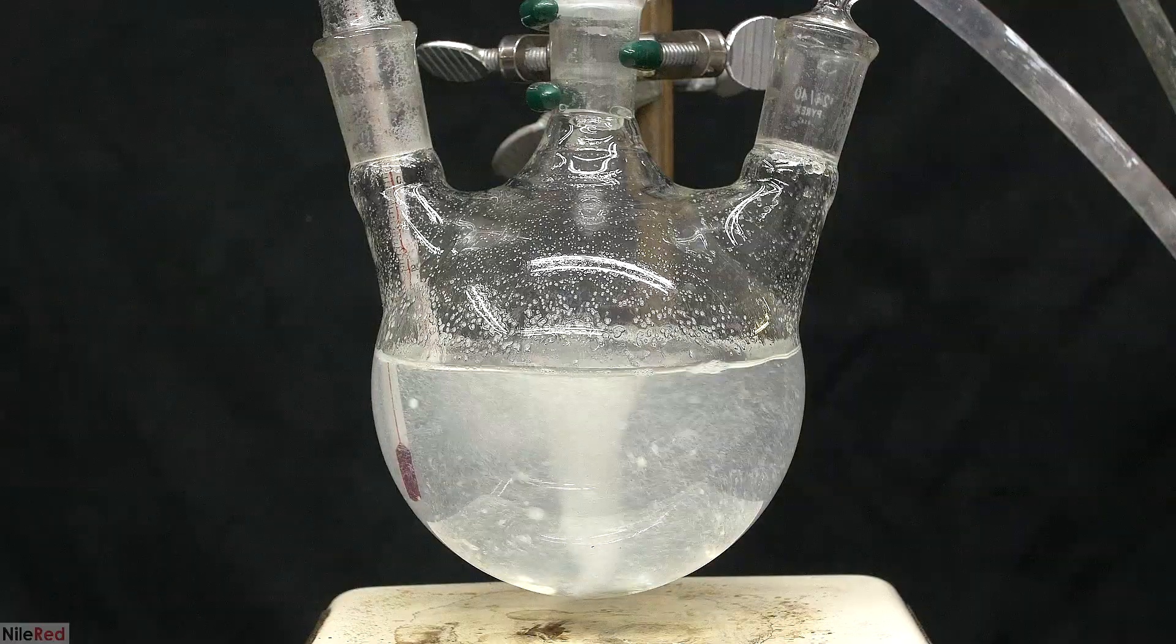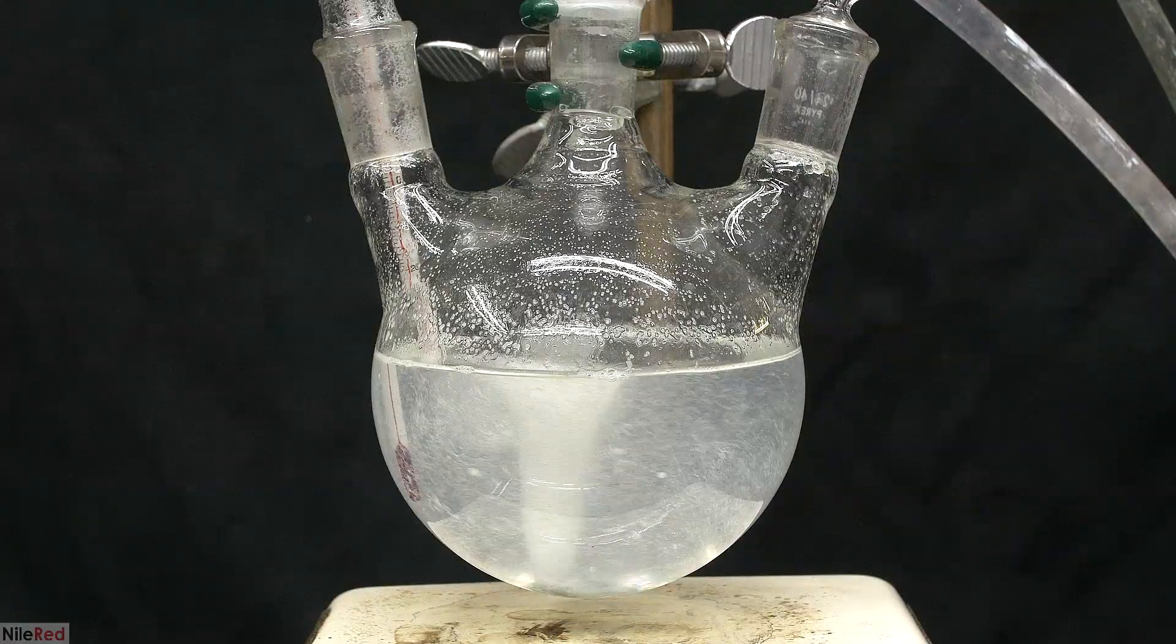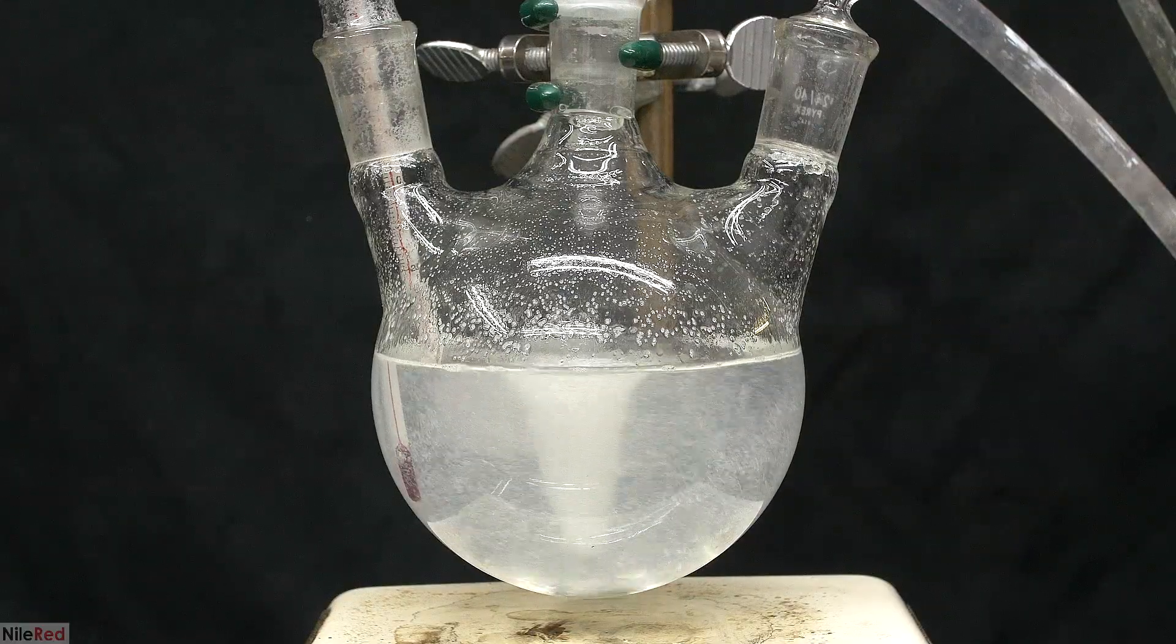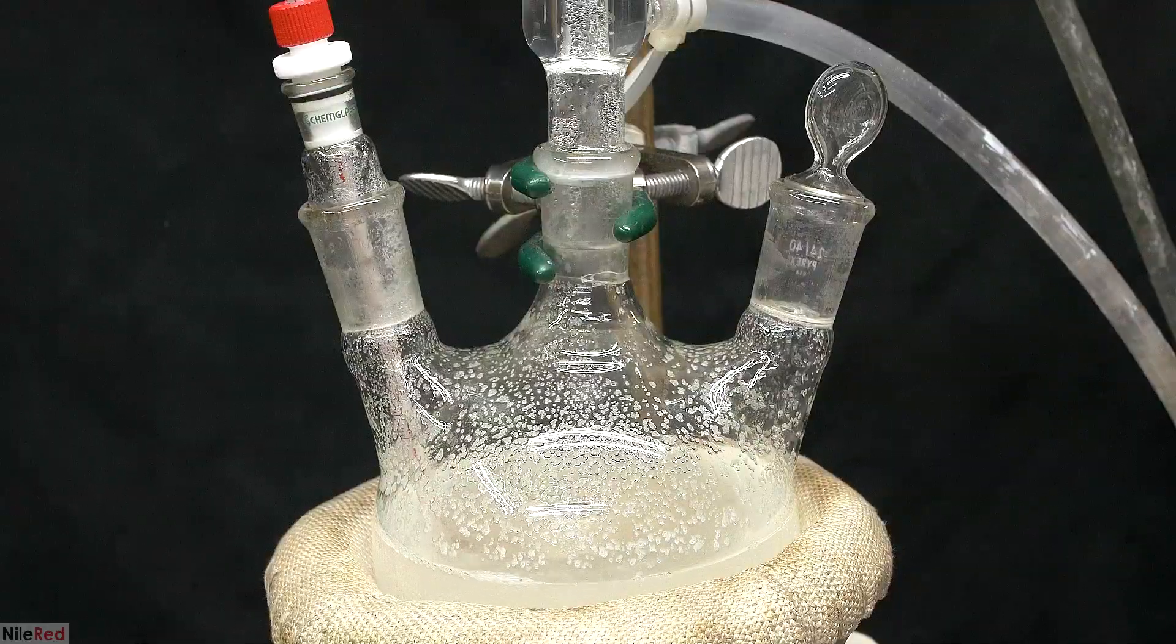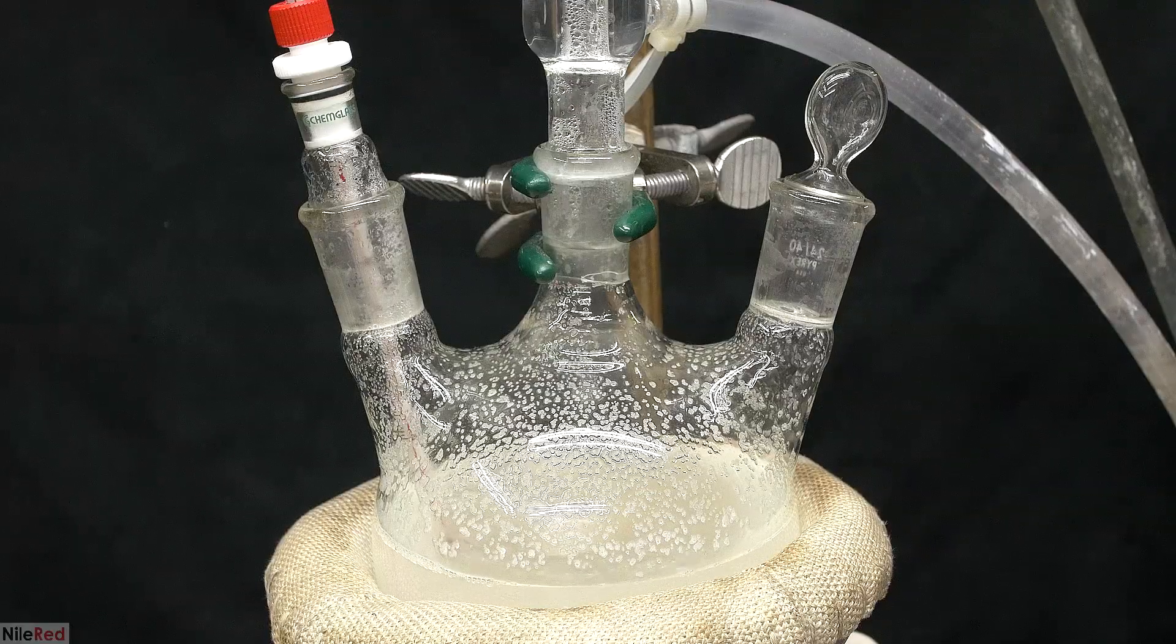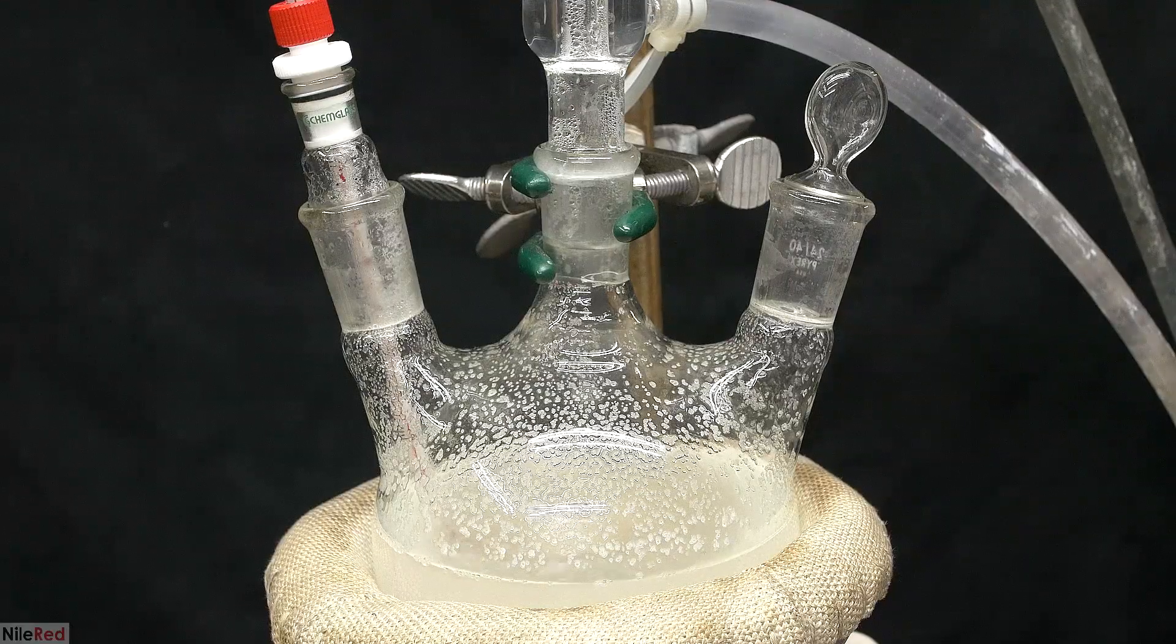I also started to see something crystallize on the sides of the flask. At first, I thought these were adipic acid crystals, but I don't think they are. Anyway, the temperature started to decrease, and I actually needed the heating mantle from this point on.